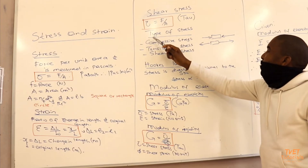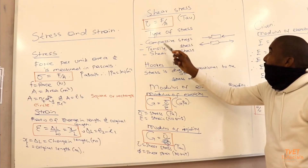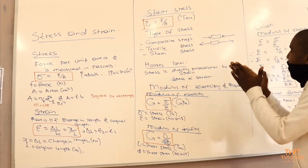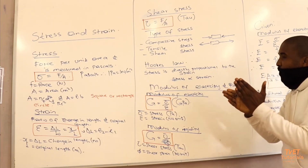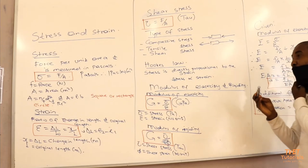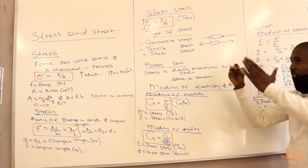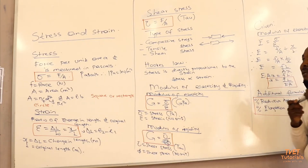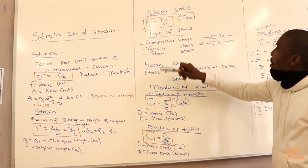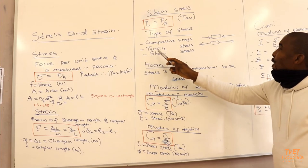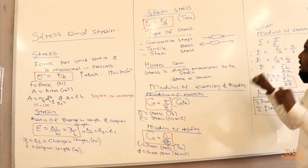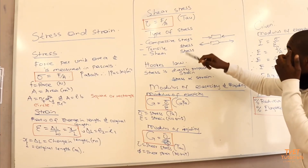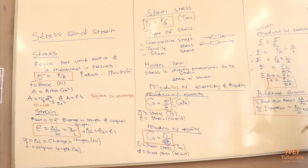We have types of stresses. Compressive stress is when the object is subjected to a compressive force. If you compress the object and it returns to its original shape, that is elasticity. If it does not return to its original shape, that is plasticity. We also have tensile stress, when the object is subjected to a tensile force, and the third type is shear stress. So there are three types of stresses.